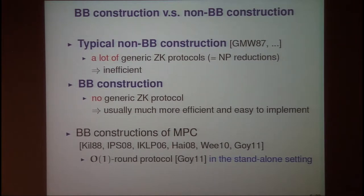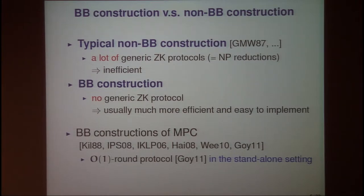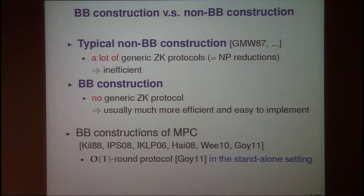In typical non-black-box constructions, there are many zero-knowledge protocols, which means we have to compute expensive NP reductions in the protocol, making it inefficient. In contrast, in black-box constructions there is no zero-knowledge protocol, and so it is usually much more efficient and easier to implement. Because of this efficiency benefit, several works study black-box constructions of multi-party computation protocols.